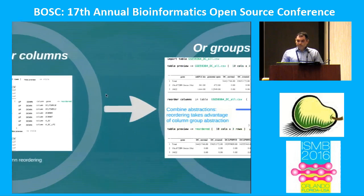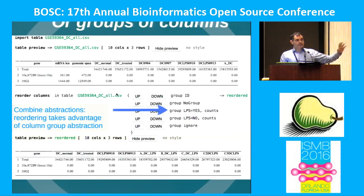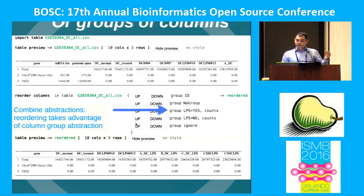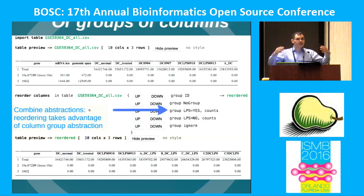We can do a lot more because we have this language for annotating tables. Instead of reordering individual columns, we can reorder groups — you see a list of groups in the table and can click up to move the group of columns annotated with LPS equal yes, and the preview works just as well. This is the first example of how we combine abstractions and compose languages to make data analysis a lot easier for the user.